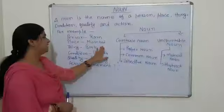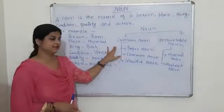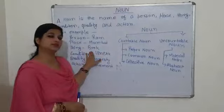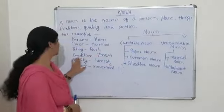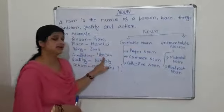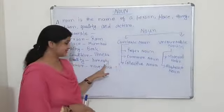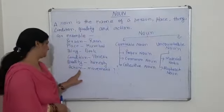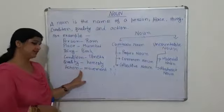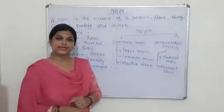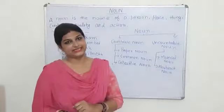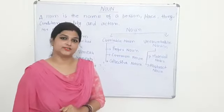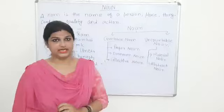Place — Mumbai, Delhi. Thing — book, chair. Condition — illness, happiness. Quality — honesty. And action — movement. Simply, you can define noun as: all naming words are called noun.